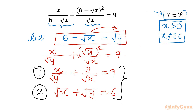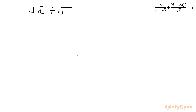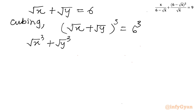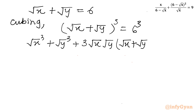Now we have to solve these two equations. I will begin with the second equation: √x + √y = 6. Let us cube both sides, so (√x + √y)³ = 6³. Using the (a+b)³ formula: a³ + b³ + 3ab(a+b). This gives (√x)³ + (√y)³ + 3·√x·√y·(√x + √y) = 216. And √x + √y = 6.